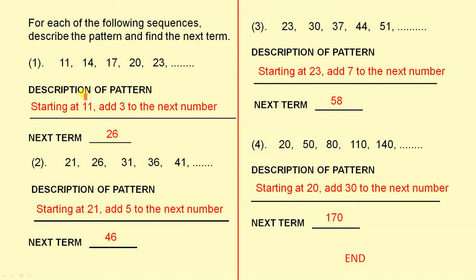For the first question, the description of the pattern: starting at eleven, add three to the next number. So when you've started at eleven, just keep adding three. So the next term is twenty-six because twenty-three plus three is twenty-six.